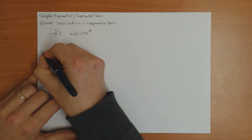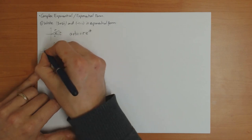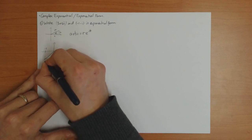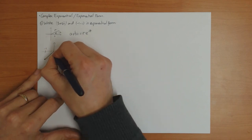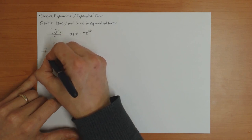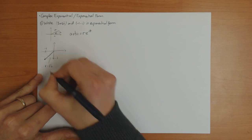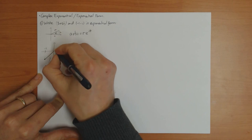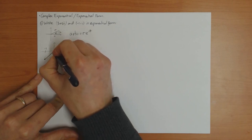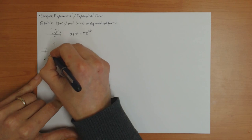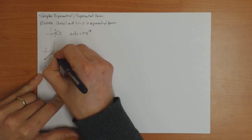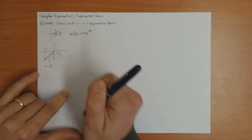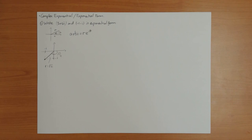So for minus 1 minus i: where's that? Minus 1 is here, minus i is there. So my complex number is there. This length is 1, this length is 1. So the length r is going to be the square root of 2. And what's the angle? Well, you can choose to measure the angle that way or this way. I'll choose to measure the angle this way, so then this is pi by 4.